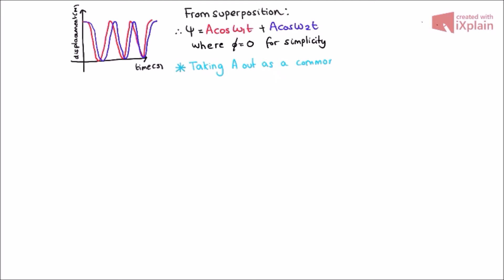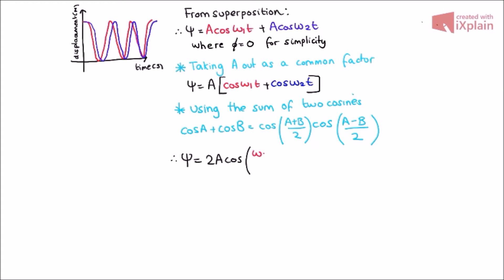So taking A out as a common factor and using the formula for the sum of two cosines, we can rewrite the displacement as 2A cos omega 1 plus omega 2 over 2t cos omega 1 minus omega 2 over 2t.